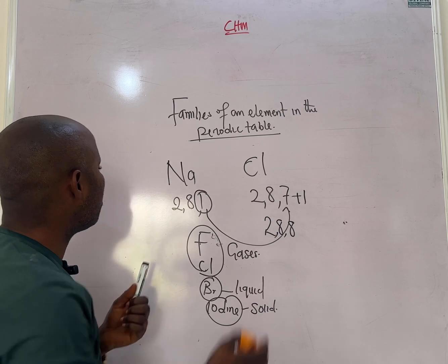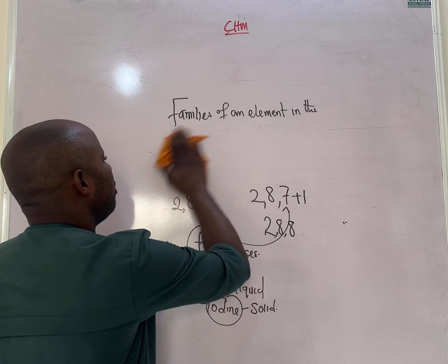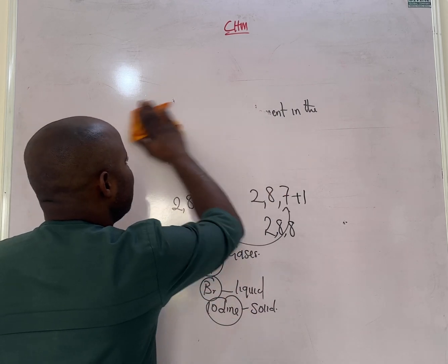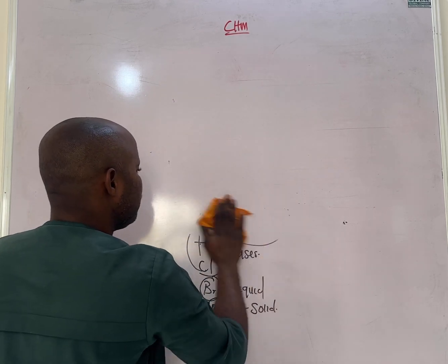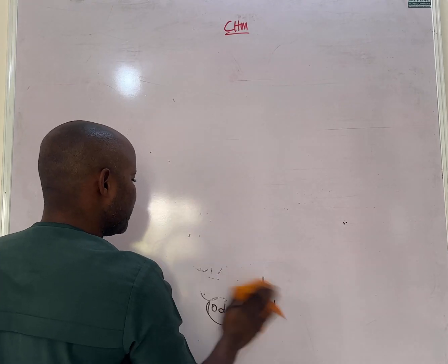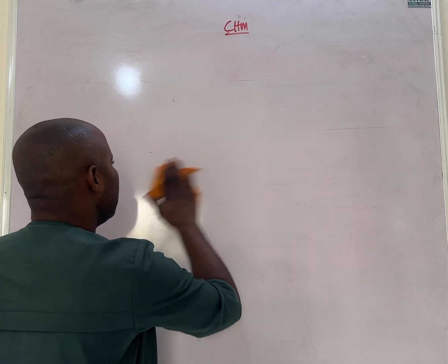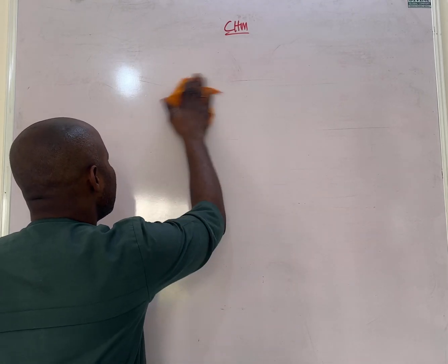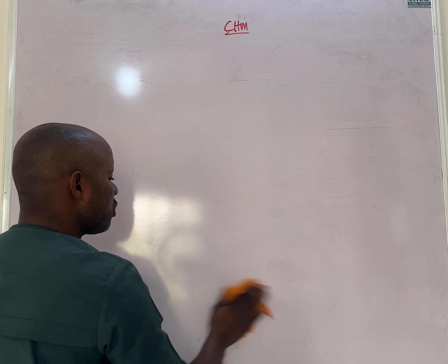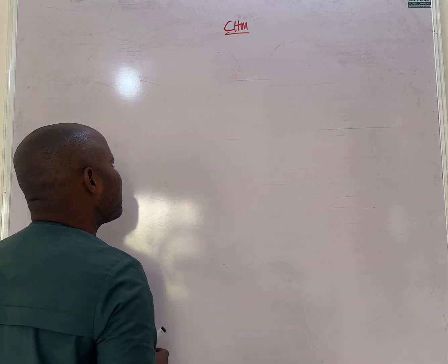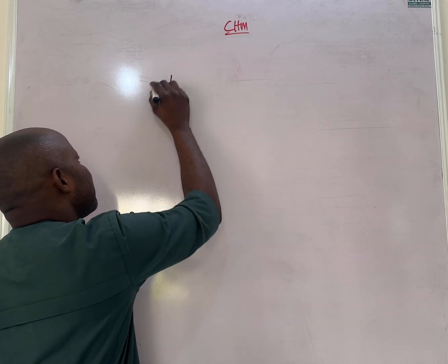After discussing the families of elements, let's move to the trends in the periodic table. We are going to discuss the major trends, each known collectively as periodicity.